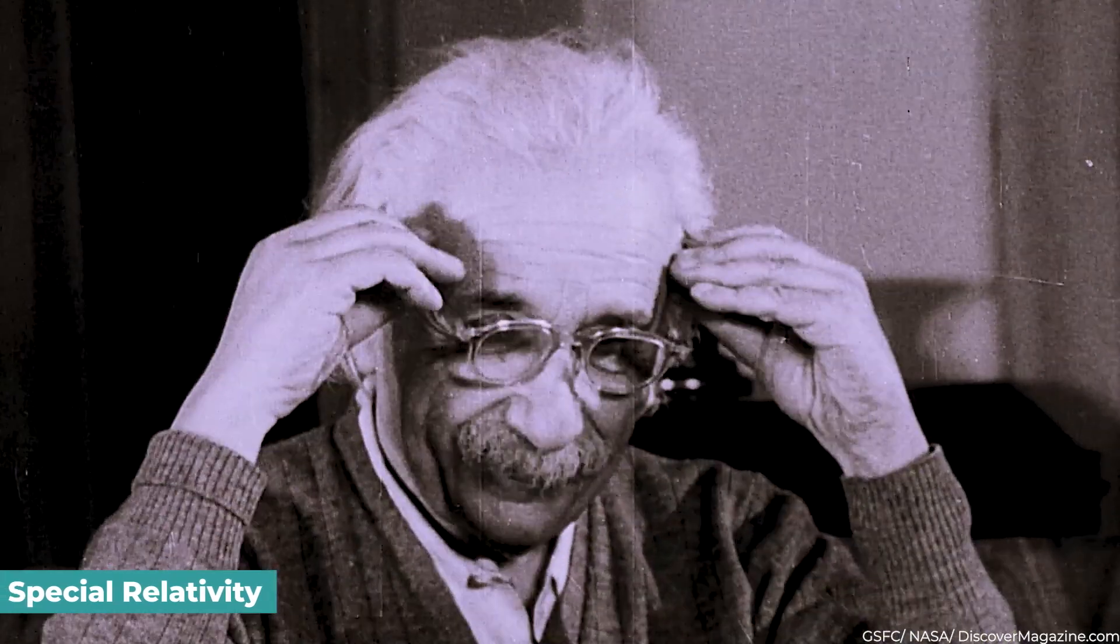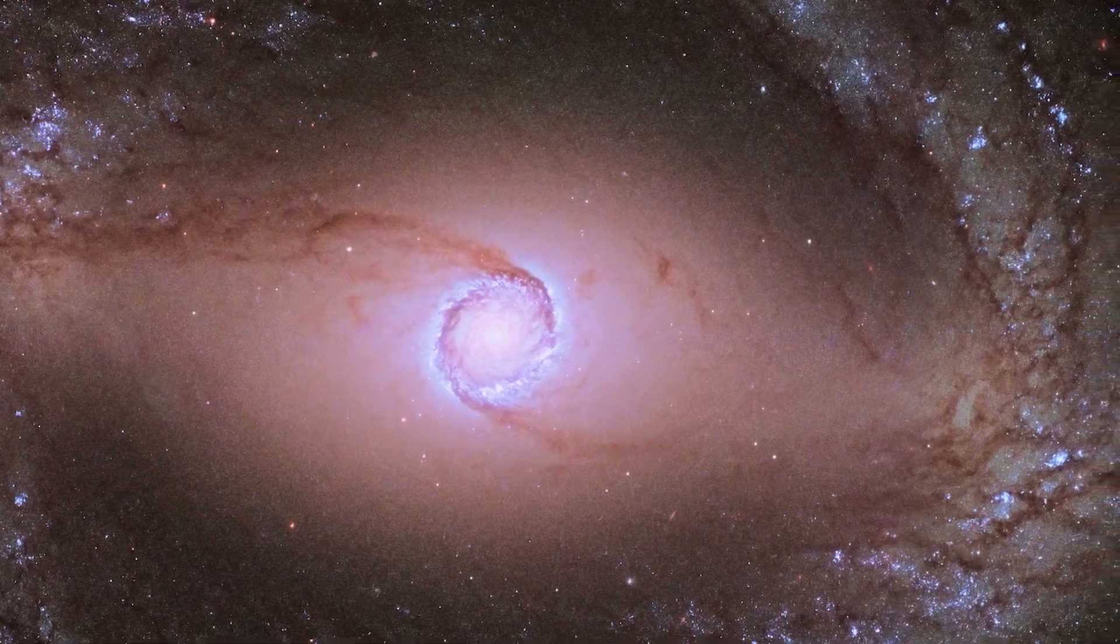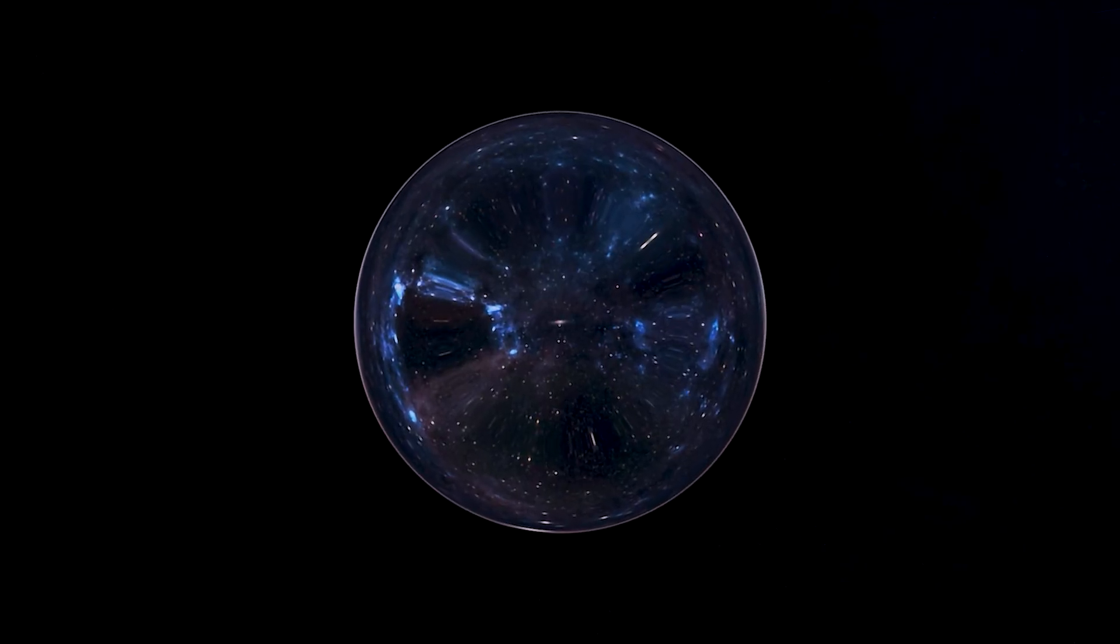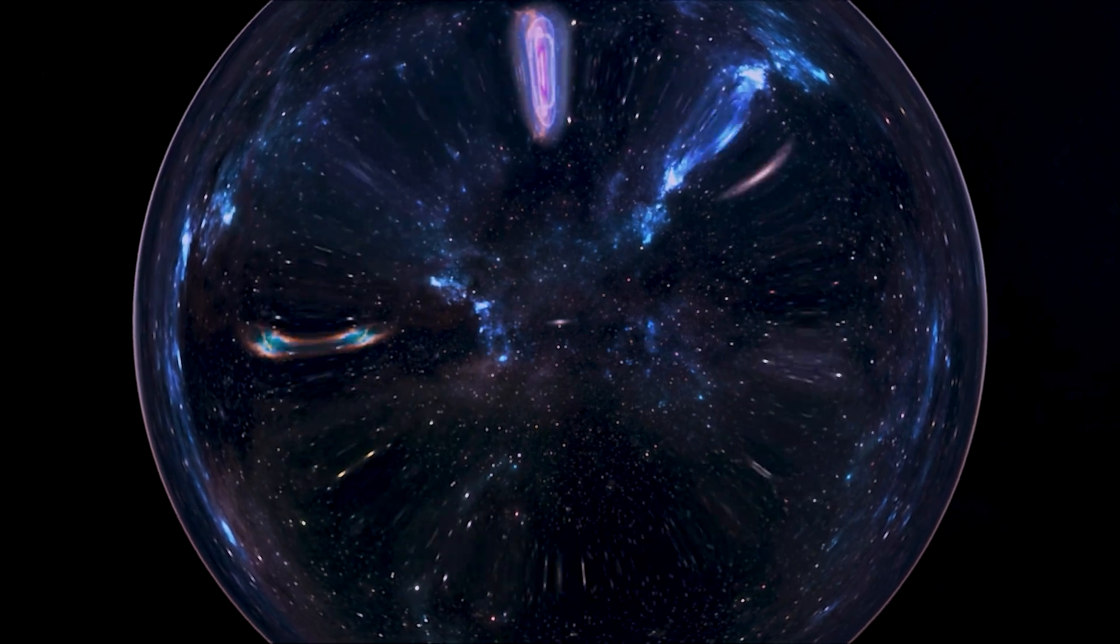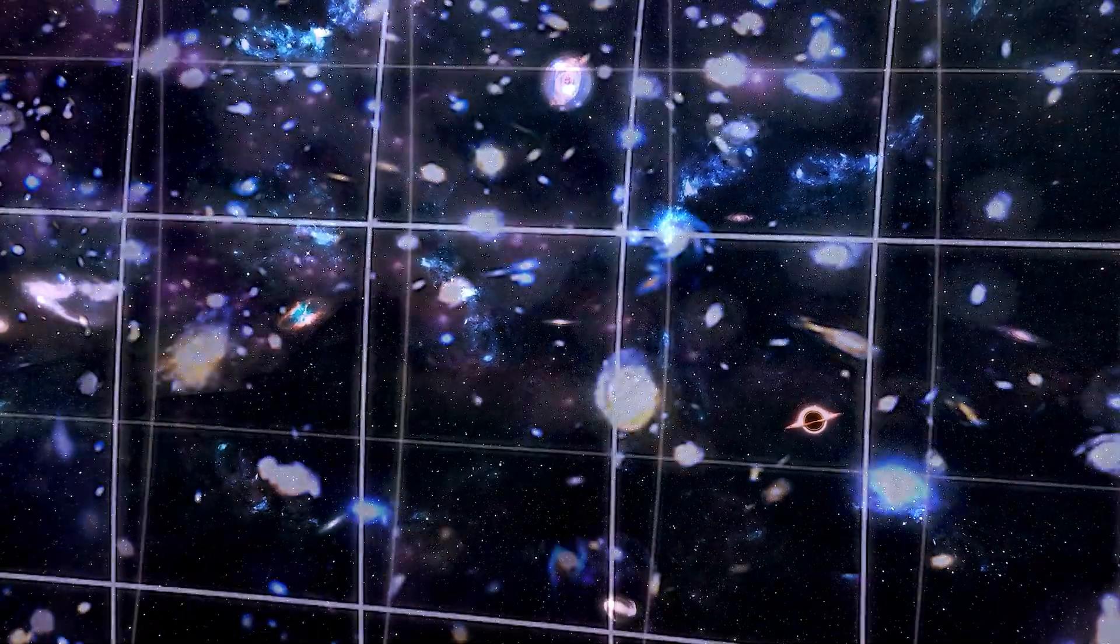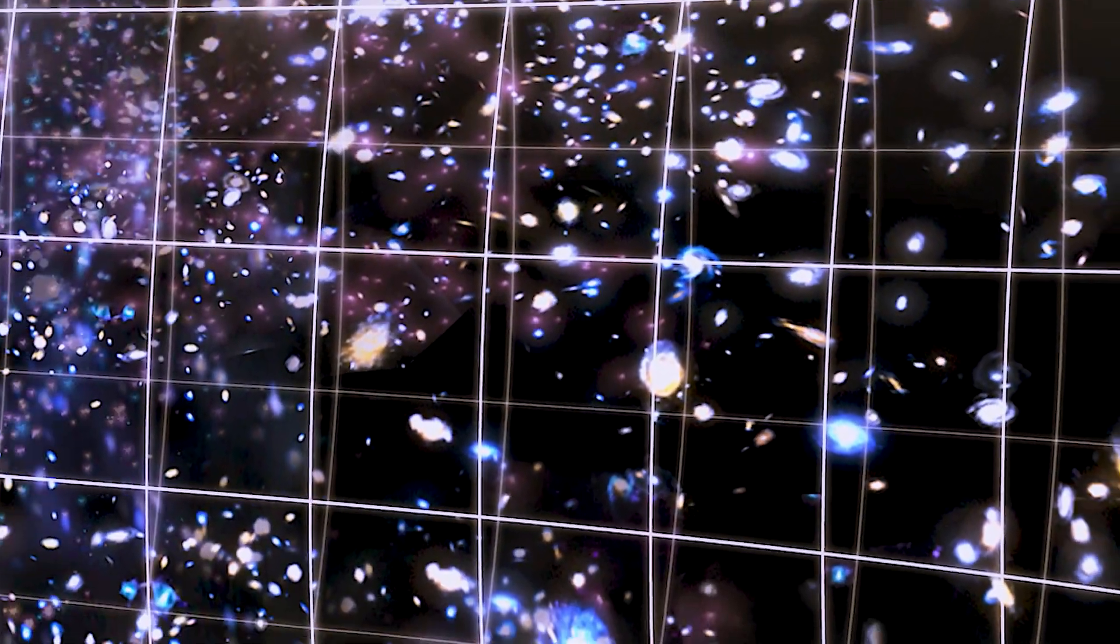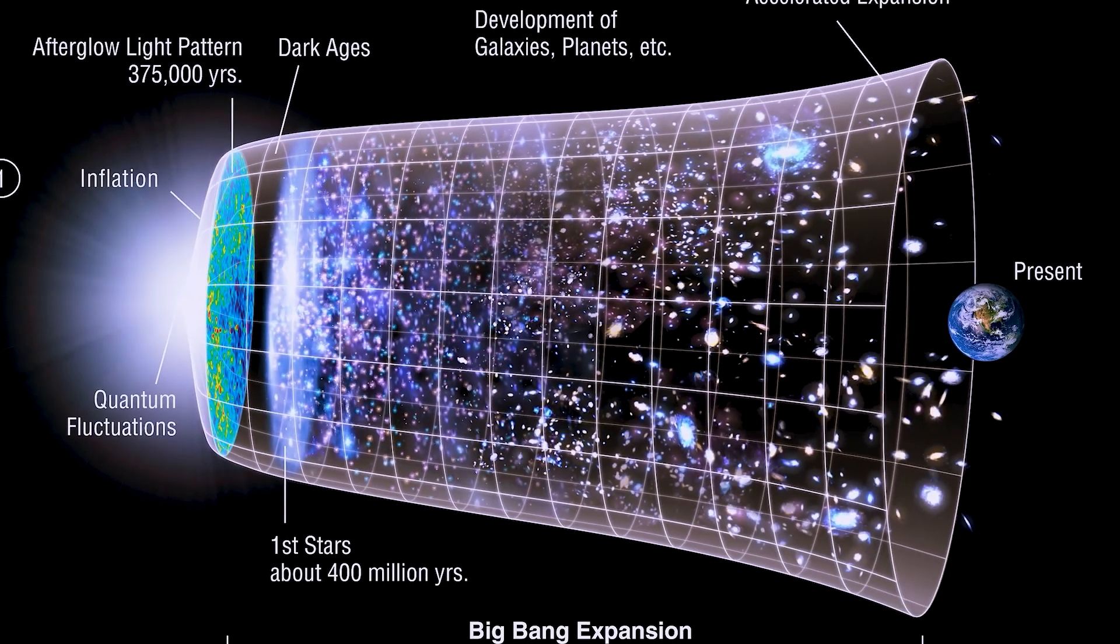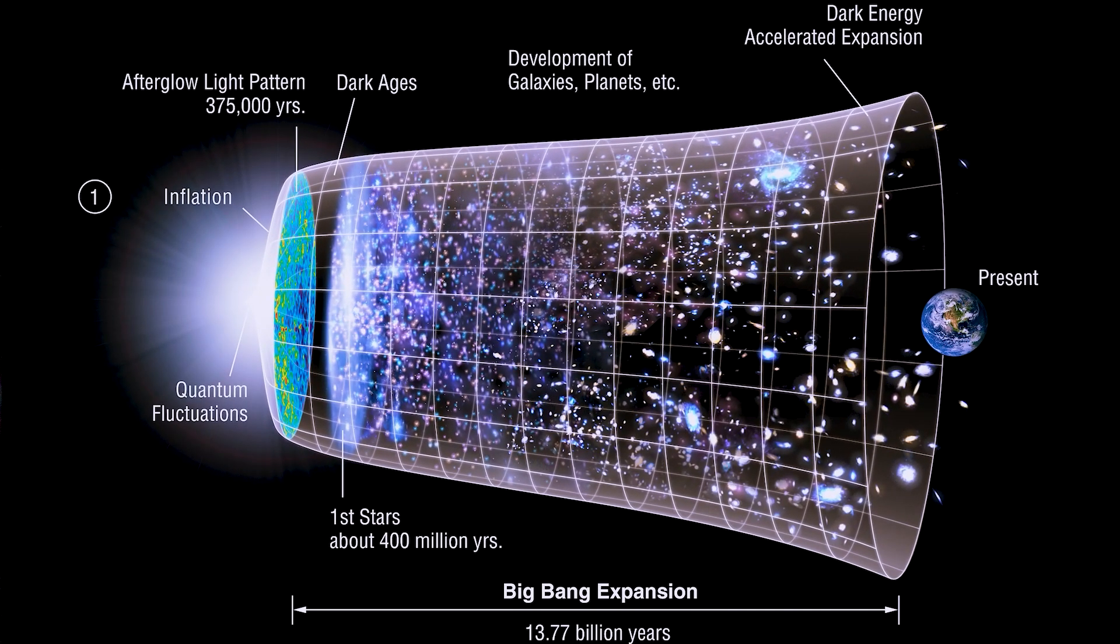While special relativity ensures that no two nearby things can ever move faster than the speed of light in relation to each other, the expansion of the universe allows for distant objects to move away from each other at velocities greater than the speed of light. Since these galaxies are moving away from Earth at a rate greater than the speed of light, no time spent waiting for their light will ever be enough.